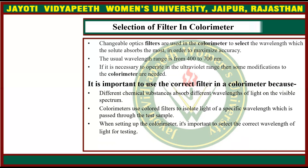The usual wavelength range is from 400 to 700 nm. If it is necessary to operate in the ultraviolet range, then some modifications to the colorimeter are needed. It is important to use the correct filter because different chemical substances absorb different wavelengths of light on the visible spectrum. Colorimeters use colored filters to isolate light of a specific wavelength, which is passed through the test sample, so when setting up the colorimeter it is important to select the correct wavelength of light for testing.